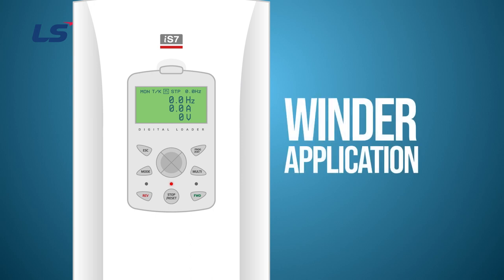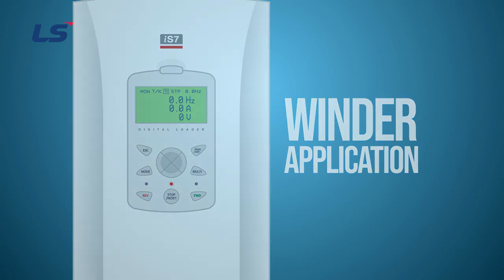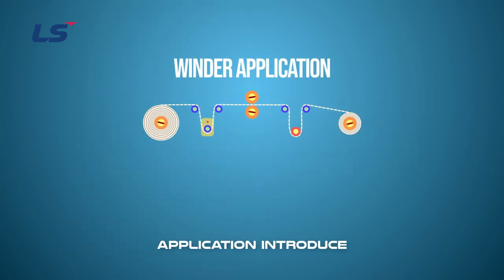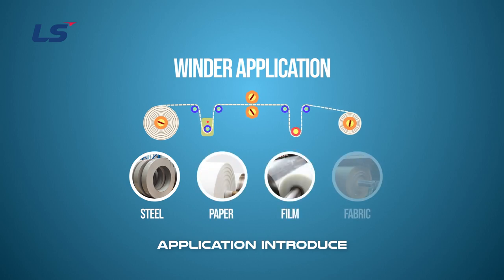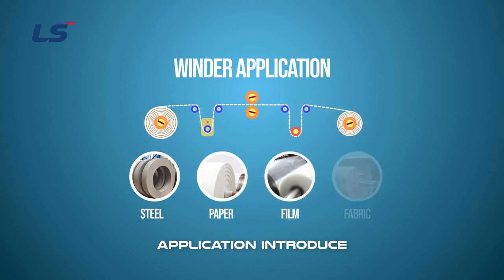Through this video, we will learn how to apply the winder application with IS-7. The winder is applied with a tension control system that releases or winds webbed materials, such as steel, paper, film, and fabric, while maintaining a certain tension.